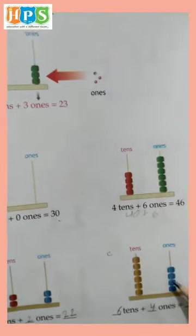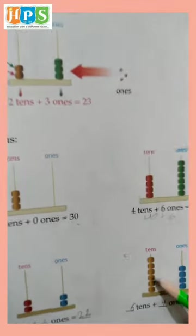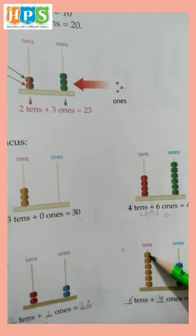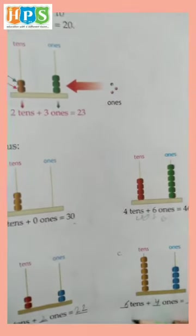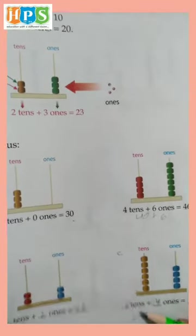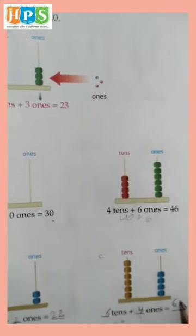One, two, three, four - four ones and one, two, three, four, five, six - six tens. Six tens means sixty. Sixty plus four is equal to sixty-four.